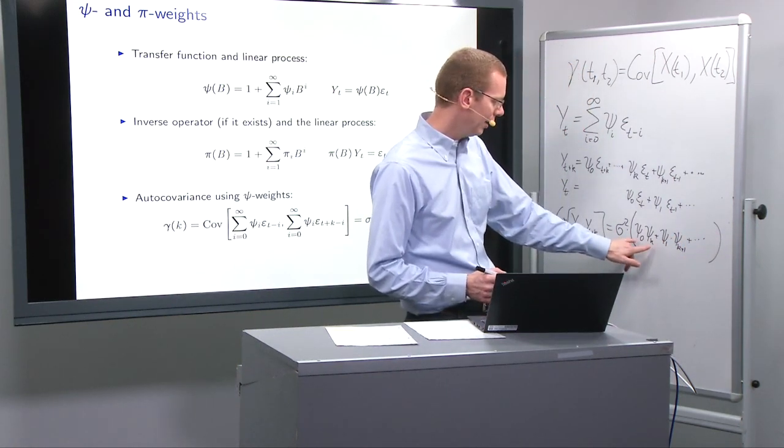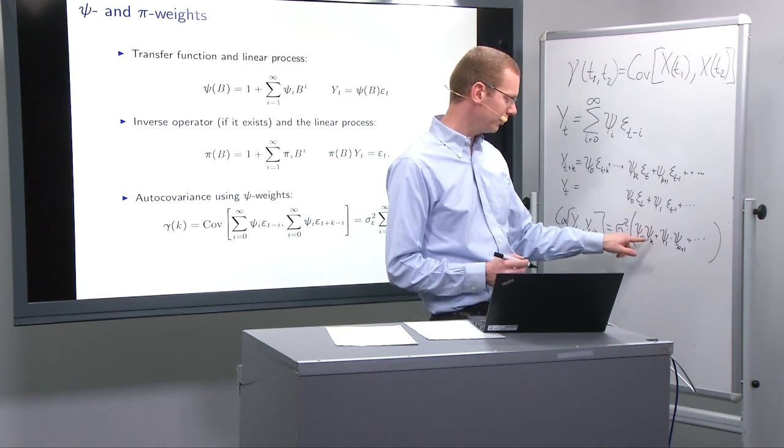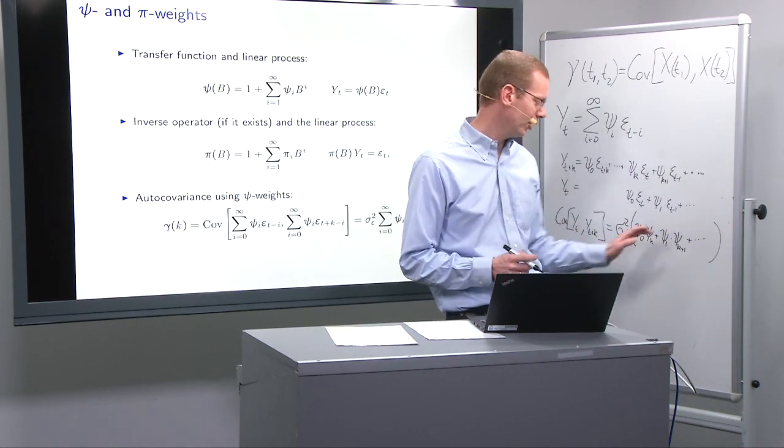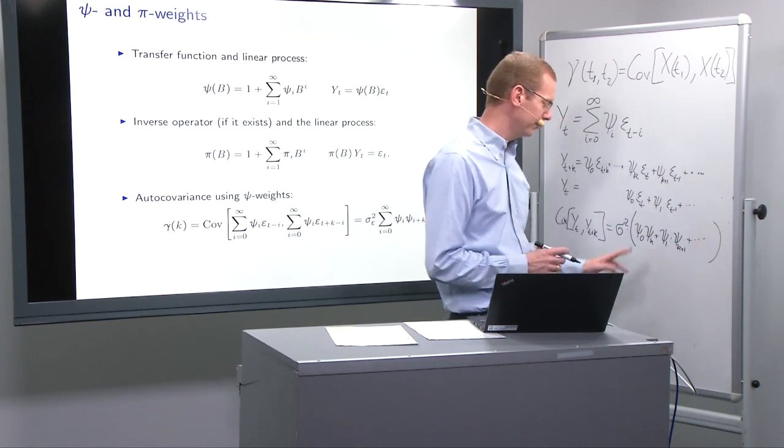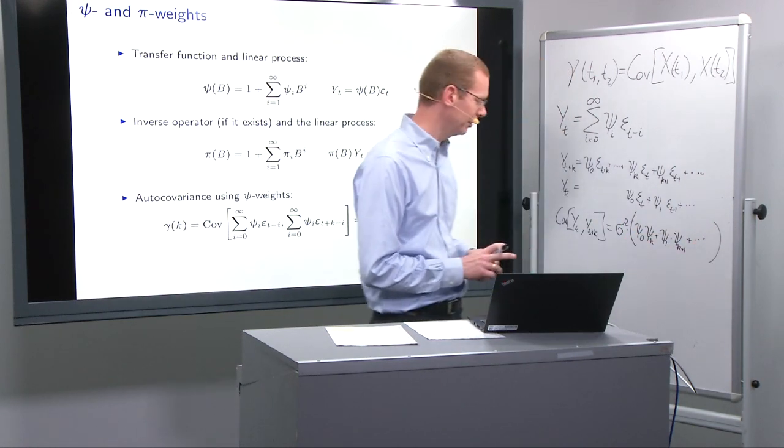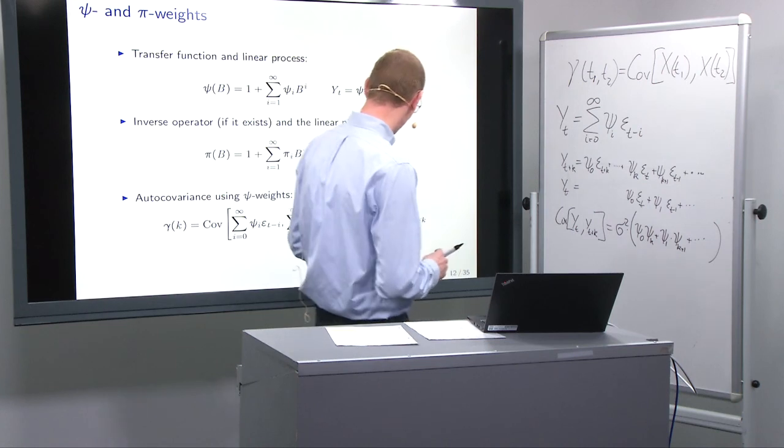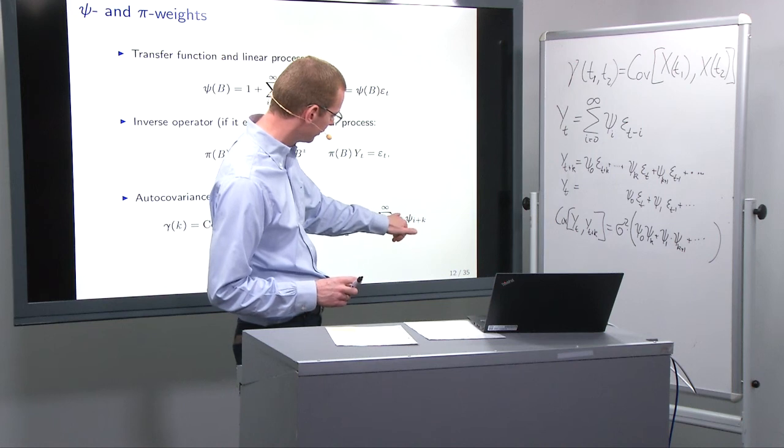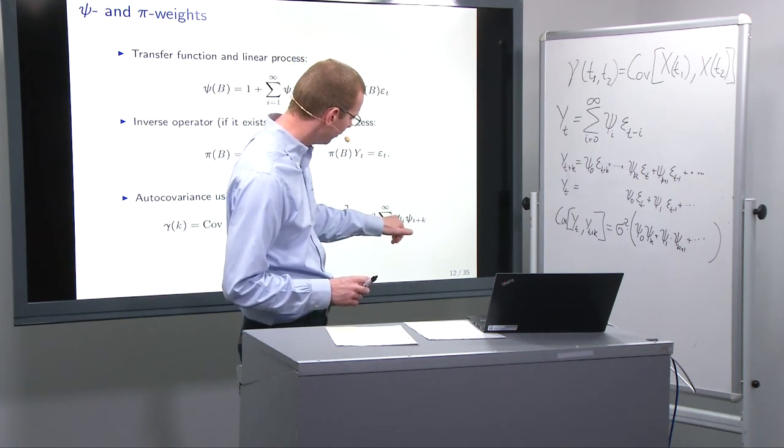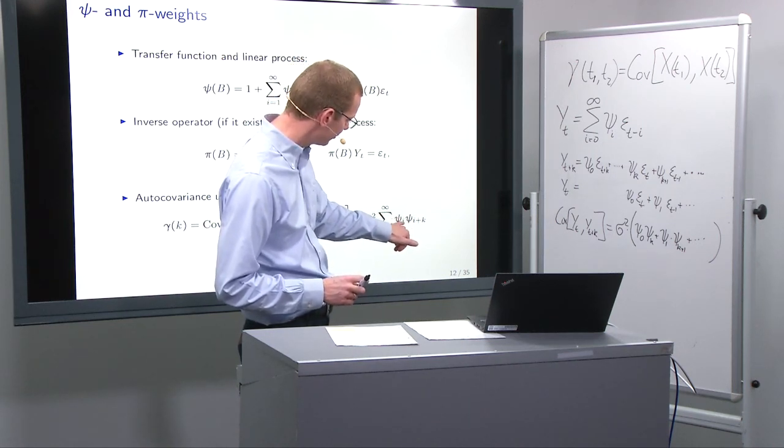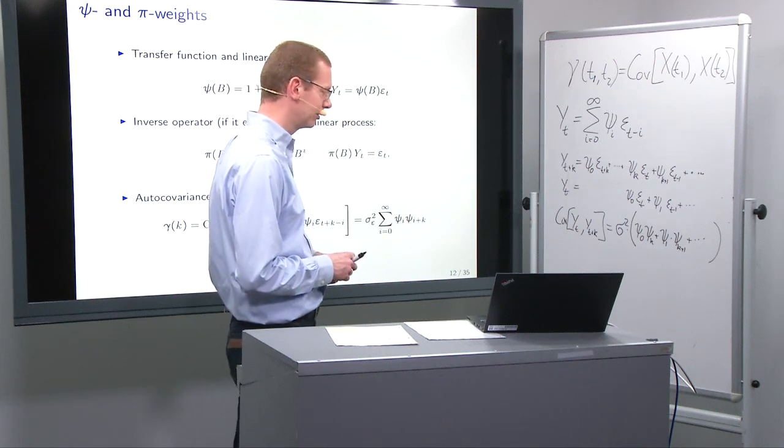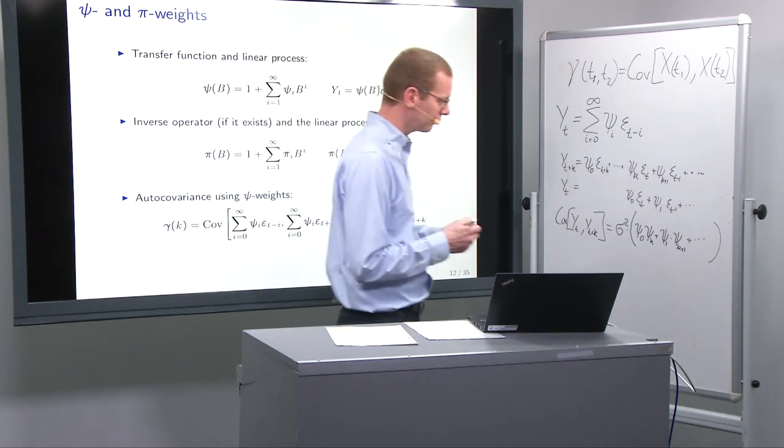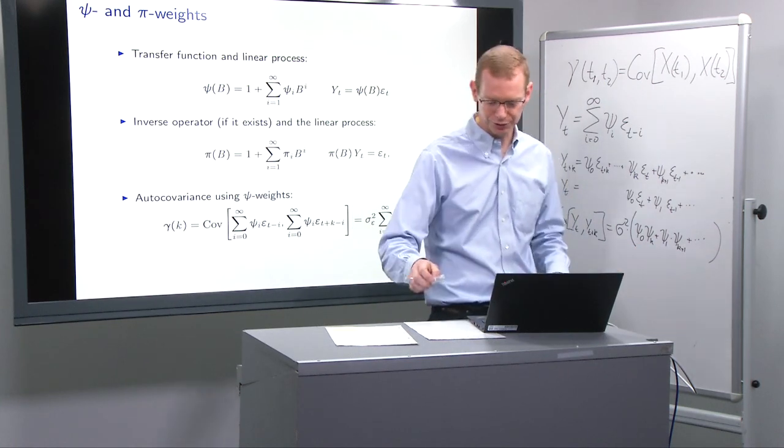So I have the product of the ψ with a k difference, summed for all positive value indices of the first element there, which is also what is written out here. From i equals zero to infinity, I have the sum of ψ_i and ψ_{i+k}. So this is how we got to it.